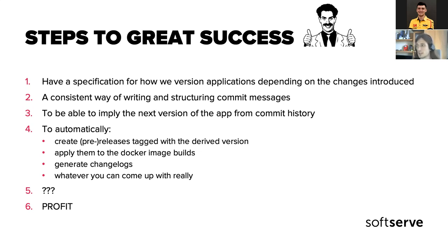The second item is a consistent way of writing and structuring commit messages — to have them all in a specific structure so that they are deducible, consistent, and just nice to read. The next item in the same scope is to actually be able to imply the next version based on that commit history, because that is what Conventional Commits allows us to do — to derive the state of the application and the actual version from what developers provide in their commits.